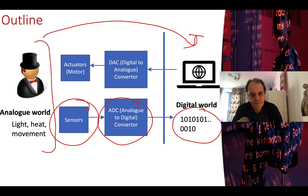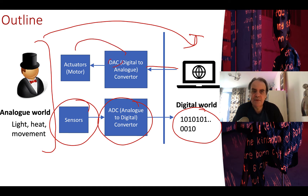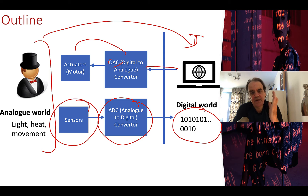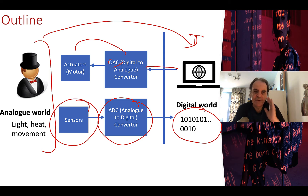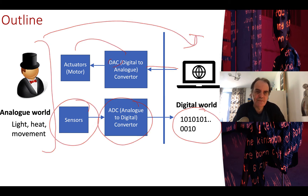As an output, we convert from a digital form back into an analog form, and we might have actuators such as motors to make things actually happen. This analog-to-digital conversion is important to be able to convert from our analog world into our digital world.